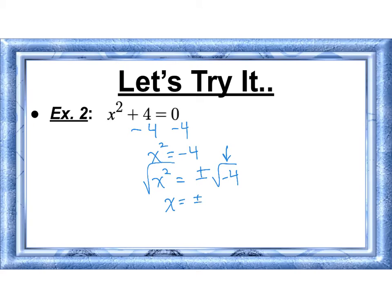But now if we think about this, we can break this up into the square root of 4 times the square root of negative 1. So that becomes plus or minus 2i.